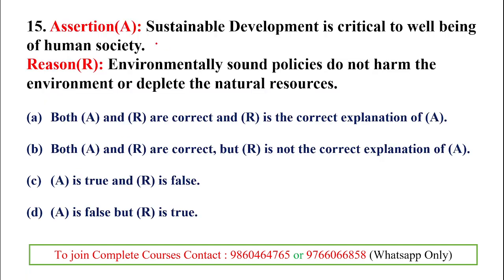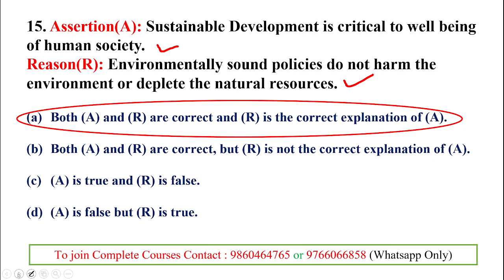An assertion-reasoning question: Assertion — Sustainable development is critical to the well-being of human society (correct). Reason — Environmentally sound policies do not harm the environment or deplete natural resources (also correct). Both are correct and R is the correct explanation of A, because sustainable development relies on environmentally sound policies that encourage use of natural resources without depleting them or harming the environment.